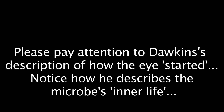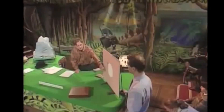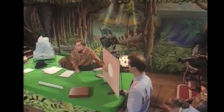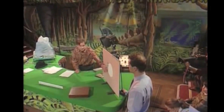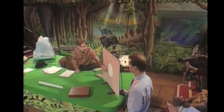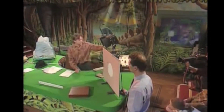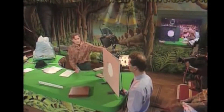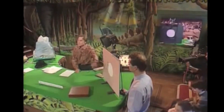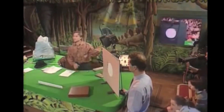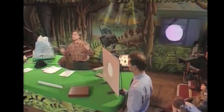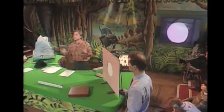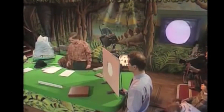Suppose we start with an ancestor who didn't really have an eye at all, but just a single, simple sheet of light-sensitive cells. That's represented by this screen here, and there's a television camera behind looking at the screen, so that we on the television screen shall see what this primitive animal would see.